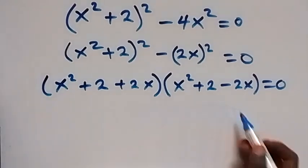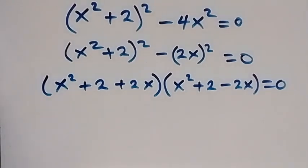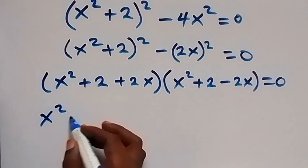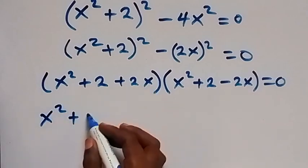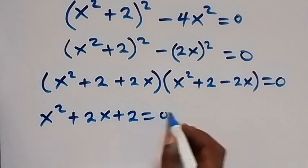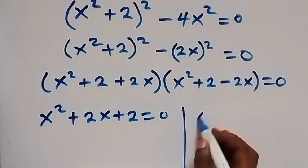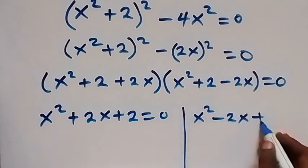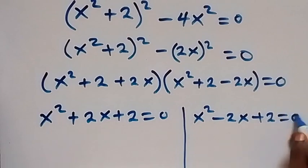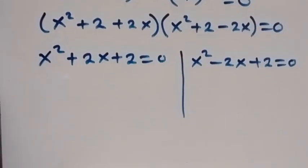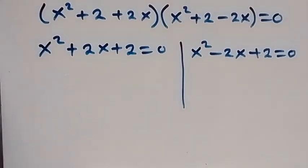From the difference of two squares we have two possible cases. The first case: rearranging gives x² + 2x + 2 = 0. The second case: x² − 2x + 2 = 0.